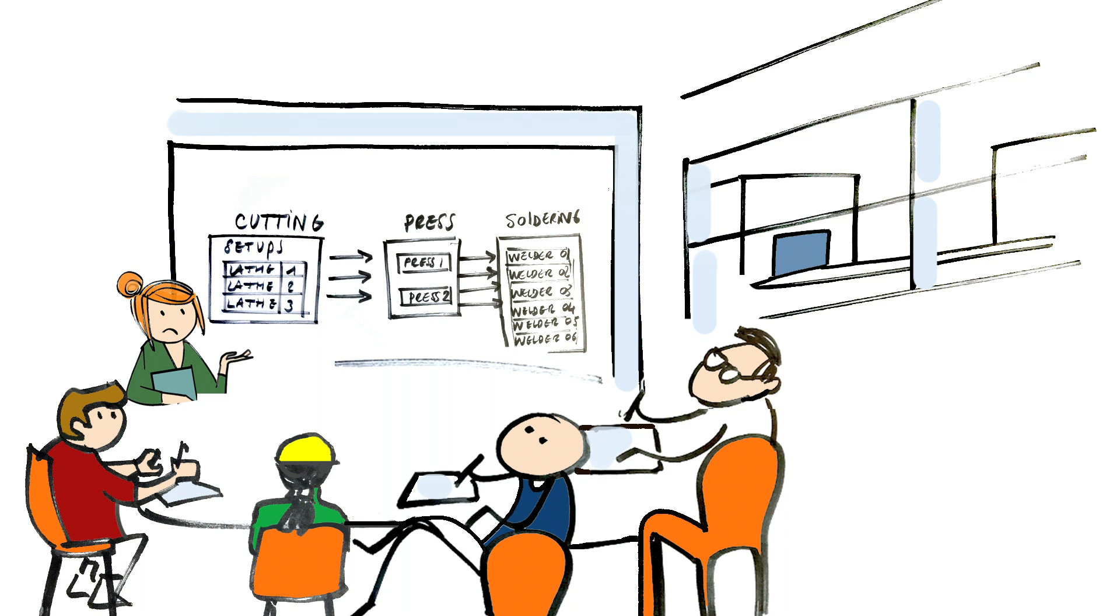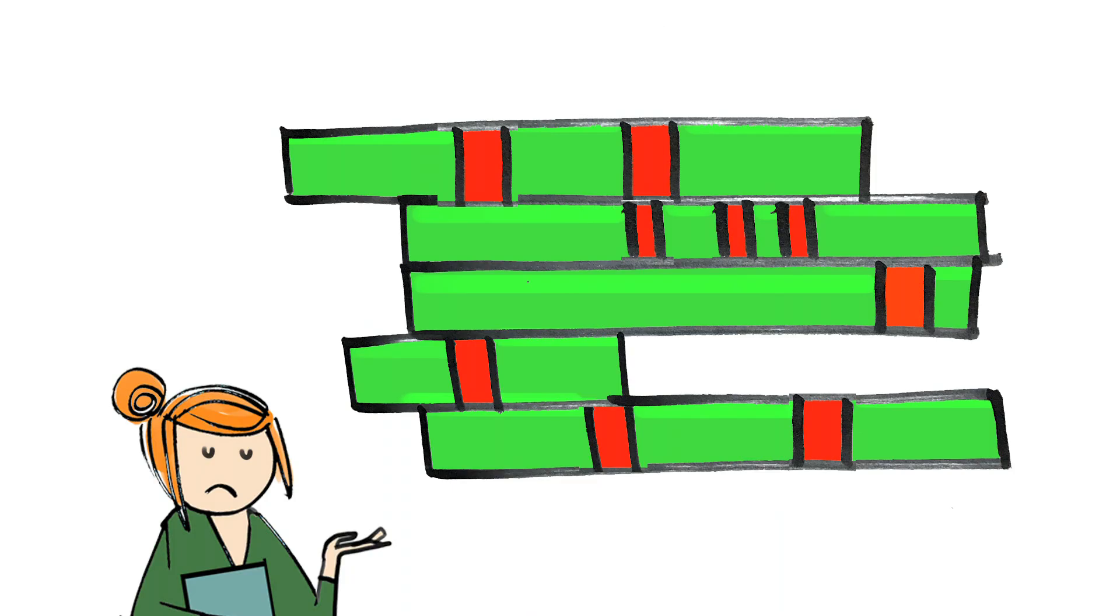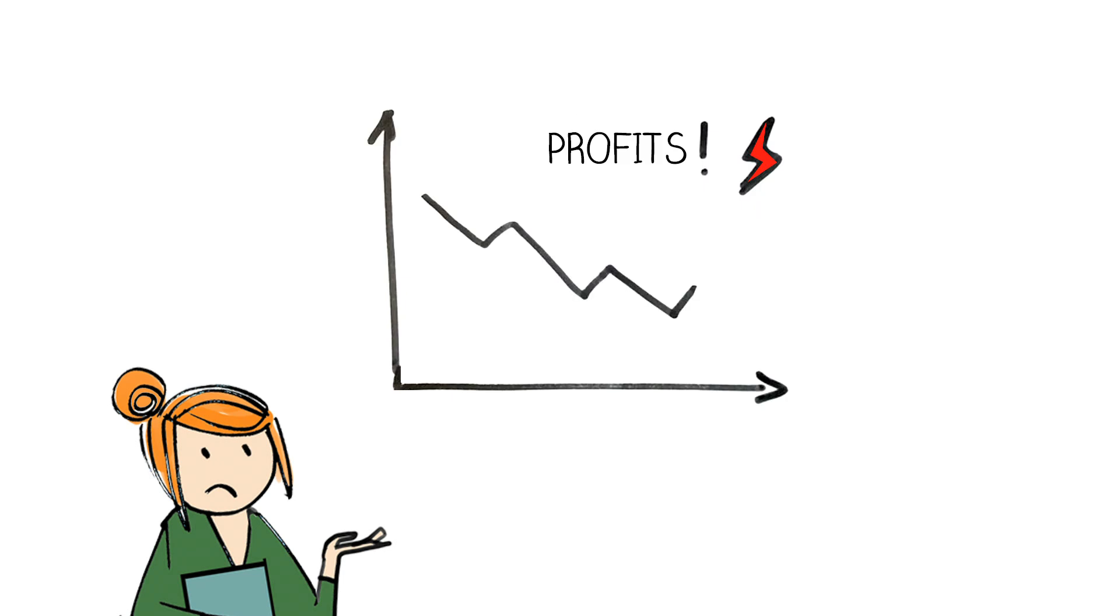As the product mix increases and we have more and more make-to-order, even with more equipment, our KPIs are poor. Planning with spreadsheets is a nightmare and there is no way to promise hard deadlines, so our profits evaporate.